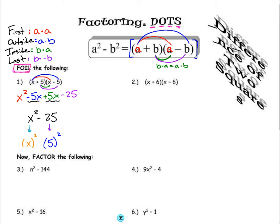Now go ahead if you want, you can try example number 2 here for your FOILing activity. Pause the video, try that problem, and then you can check your steps. First, outside, inside, last gives me x squared minus 6x plus 6x minus 36. Since these two cancel each other out, I'm left with x squared minus 36, which is the same thing as x squared minus 6 squared.